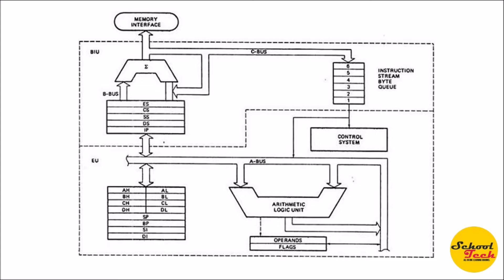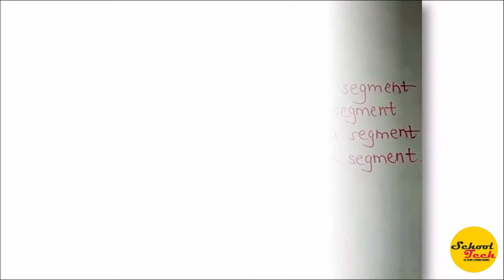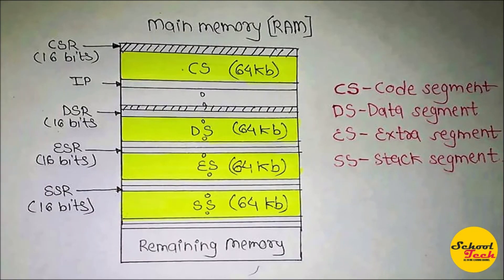This is the memory segmentation of the 8086 architecture. Memory segmentation is a memory management technique in which the 1 MB of total memory supported by the 8086 microprocessor is divided into 4 logical partitions called segments.